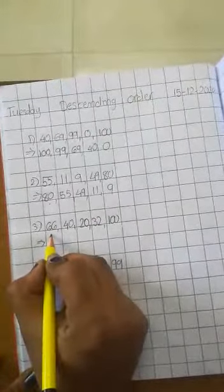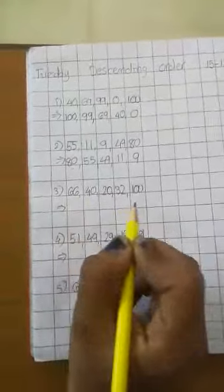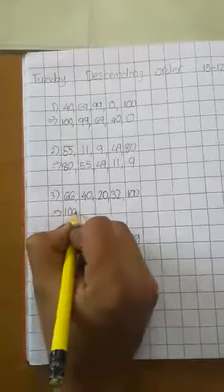Next, 66, 40, 20, 32, 100. Which number is big? 100. The right first 100. 100 before?